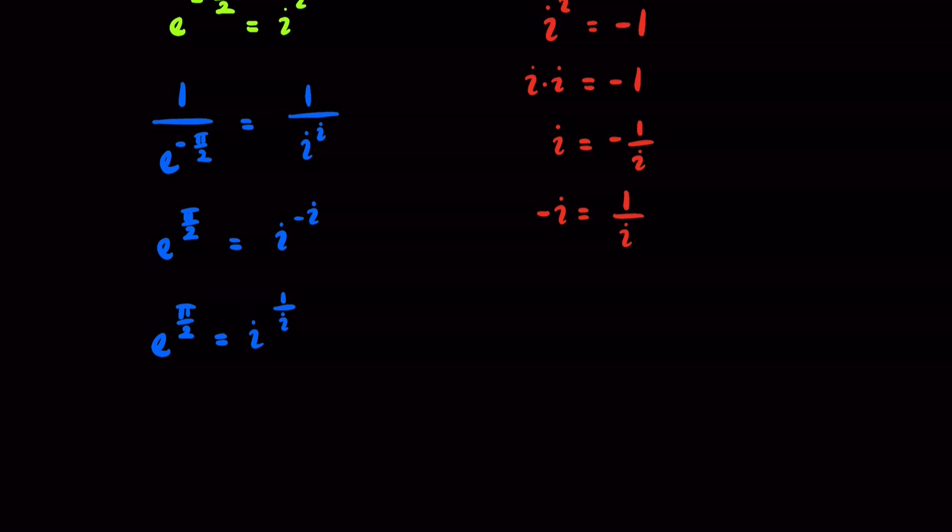Well, a power of 1 over i is just equal to the i-th root. So, we have e to the pi over 2 equal to the i-th root of i.